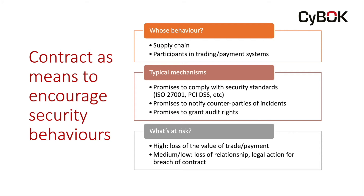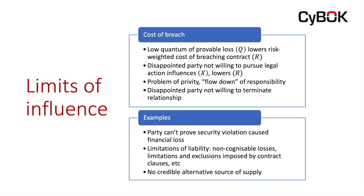The highest risk in breaking these promises might be the loss of the value of a trade or the value of a payment, in cases where people are participating in a trading platform or a payment system. At medium or lower risk, a party might face a loss of relationship or a legal action for breach of contract. Are those really effective threats? Why are there limits on the ability of a contract to influence behavior? It may be that breaching a contract doesn't cost very much — due to a low quantum of provable loss, a disappointed party not being willing to bring a legal action, technical problems involving privity, or a party being unable to prove that a security violation caused a financial loss.